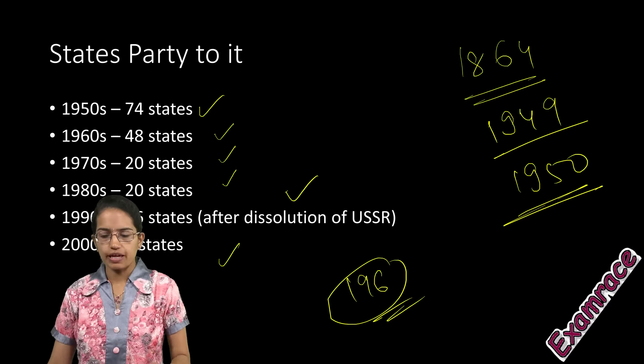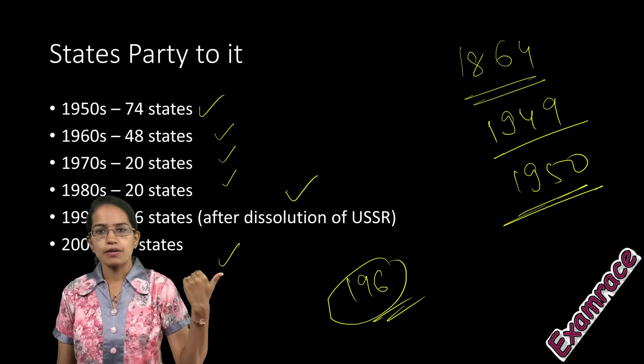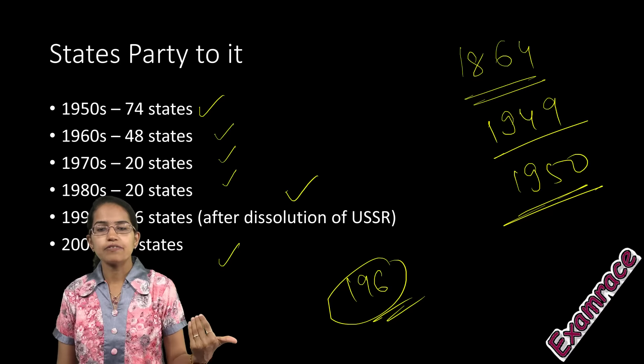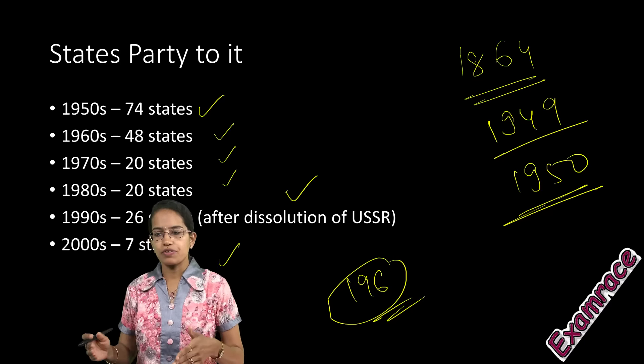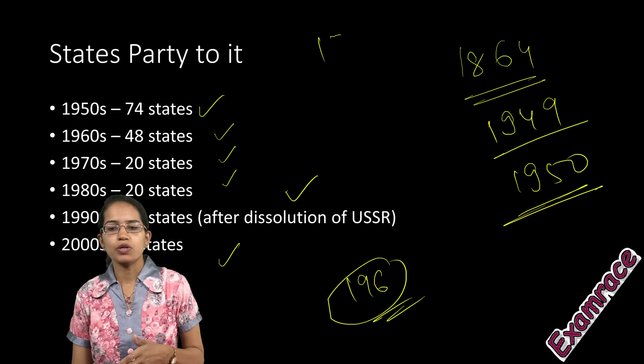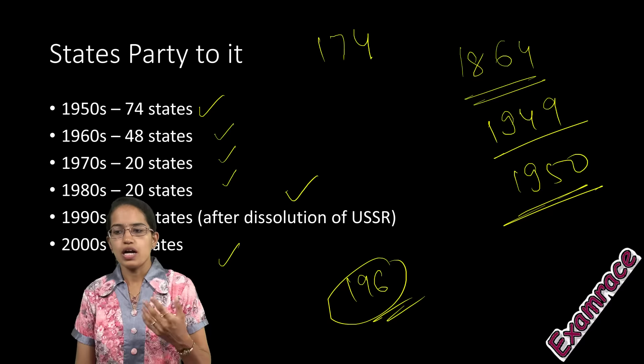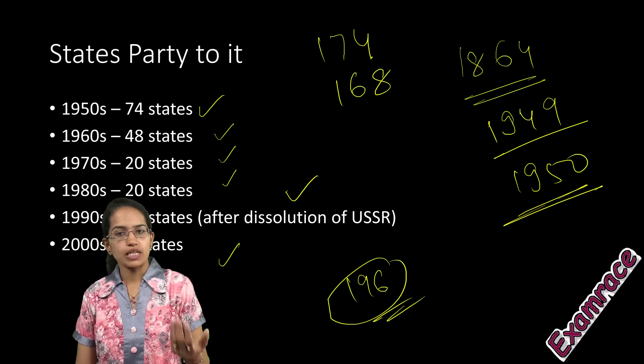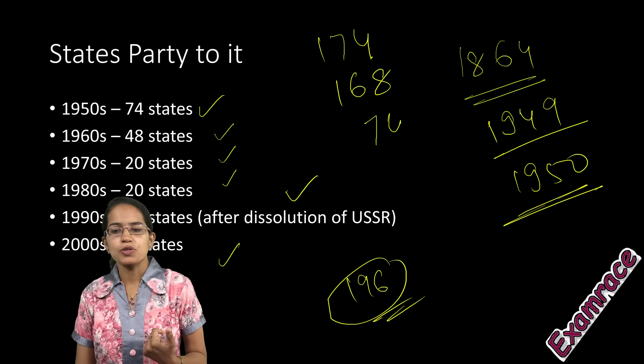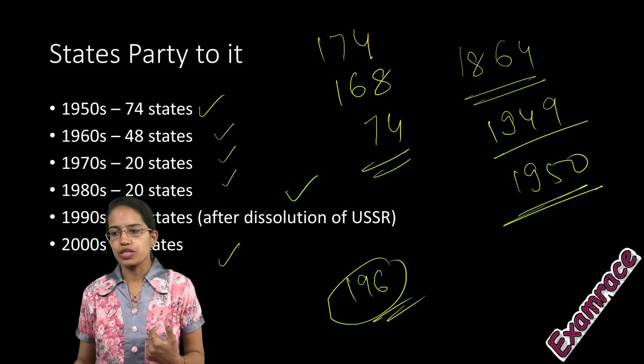Three protocols came up: two in 1977 and another in 2005. The first protocol had 174 nations that ratified it, the second protocol was ratified by 168 nations, and the last protocol was ratified by 74 or 75 nations.